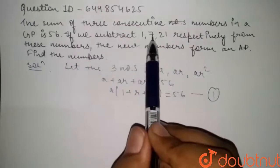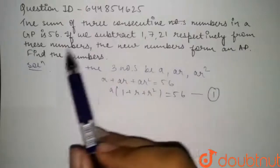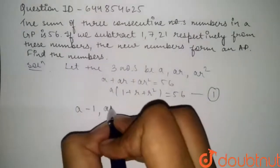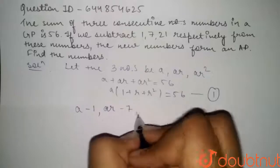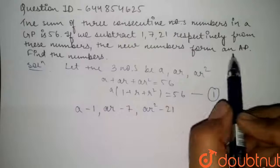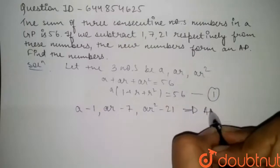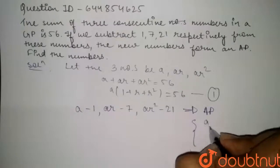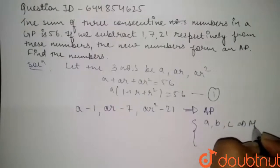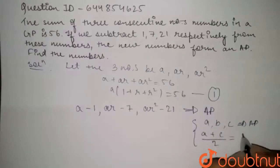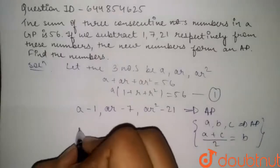It is given that if we subtract 1, 7, and 21 respectively from the first, second, and third numbers, the new numbers form an AP. Using the property of AP which states that if a, b, c are in AP then (a + c) / 2 = b, we apply this property here.